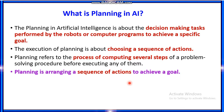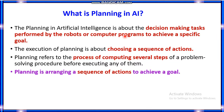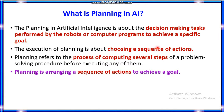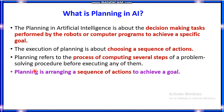So what is planning? Planning in AI is about the decision-making tasks that are performed by the robots or the computer programs to achieve a specific goal. The execution of planning is about choosing a sequence of actions — planning is arranging a sequence of actions to achieve a goal.